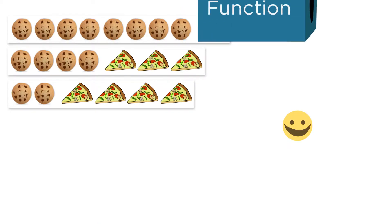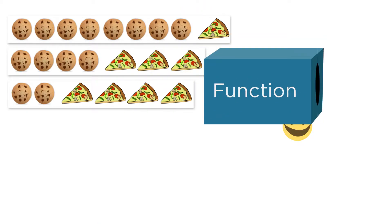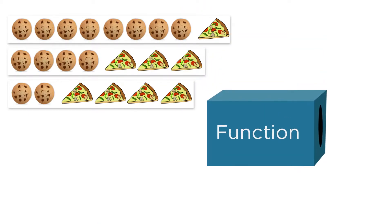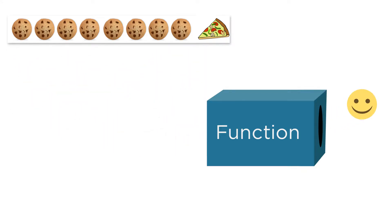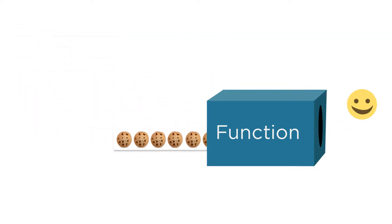One way we could do this is by brute force. We could take your utility function and try every possible combination of pizza and cookies that you can afford to find out which one gives you the largest value for utility. In the example from the last lecture, this might be reasonable.